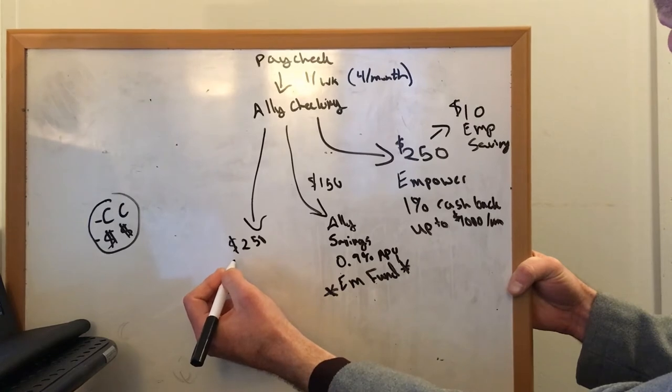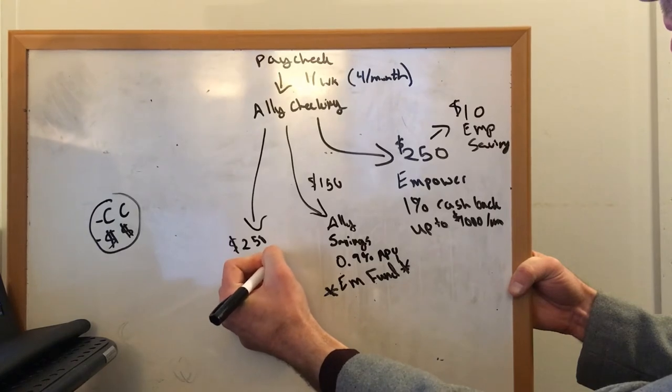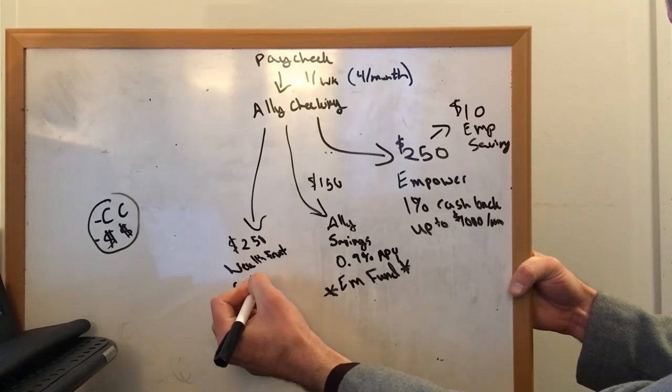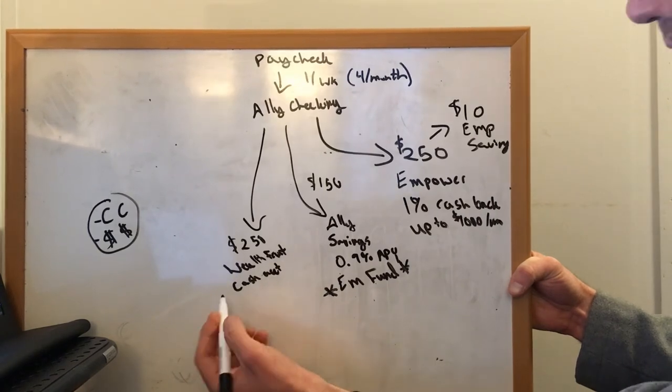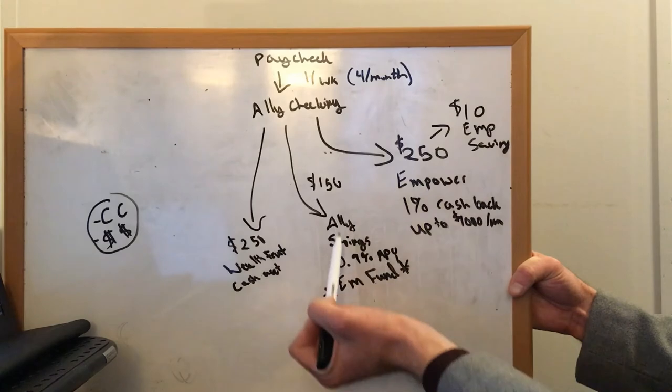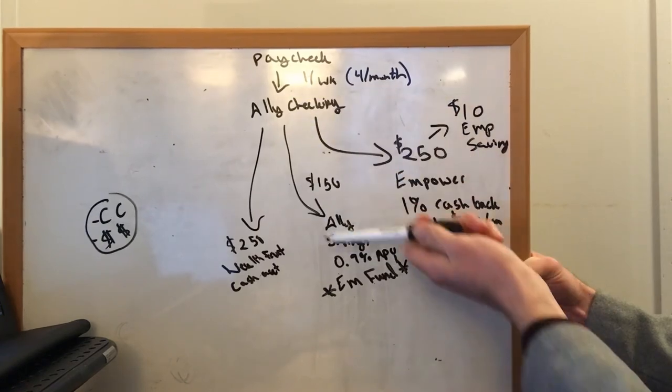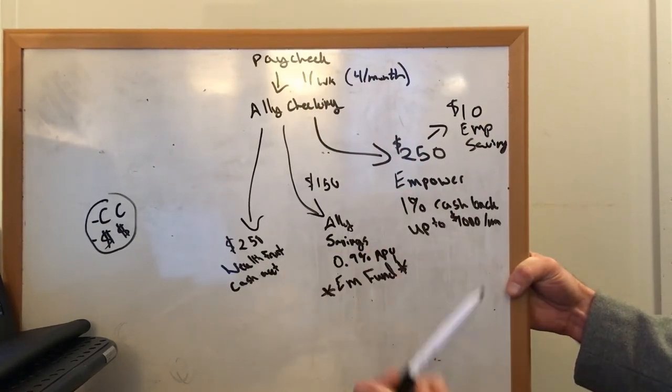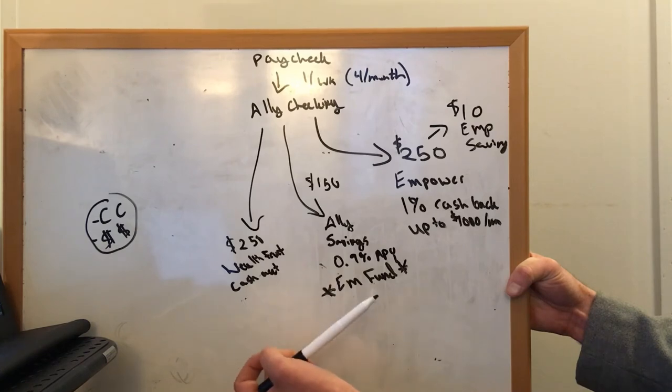So this is kind of my reserve backup emergency fund. And this is, so it's a little bit harder to access because it's not with the same banking institution like this one. This is an Ally savings. This is Ally checking. So if I need to move money back to checking real quick, I can. This, it'll take a few days. So this is kind of a reserve saving account. I think I have almost a thousand in here and like 1500 in here.